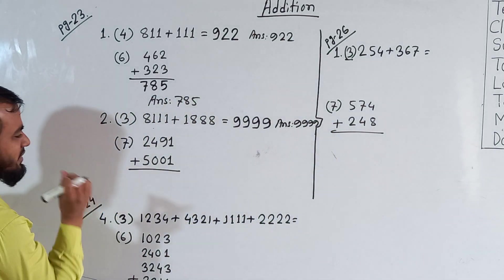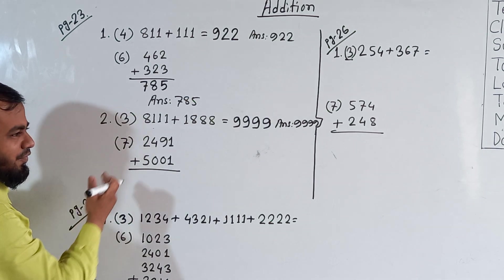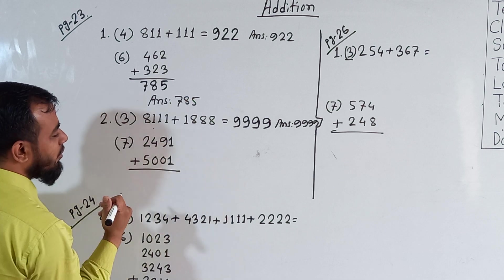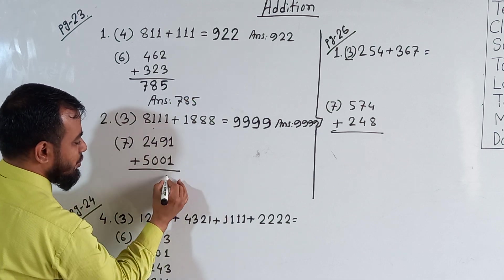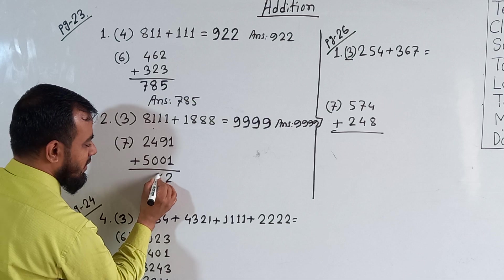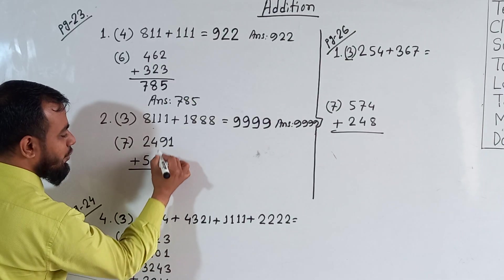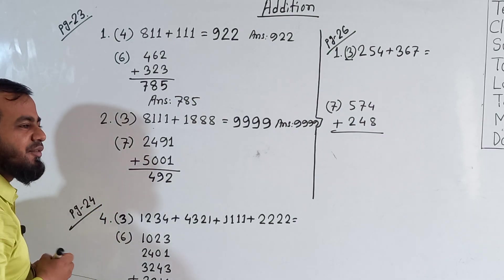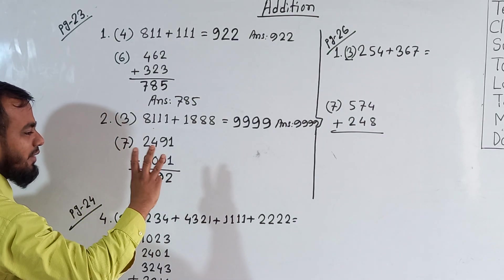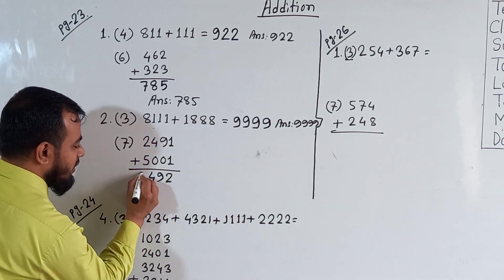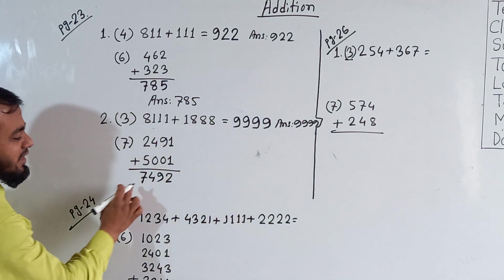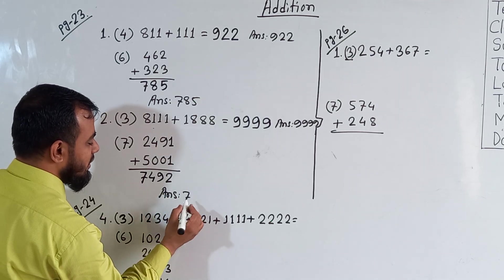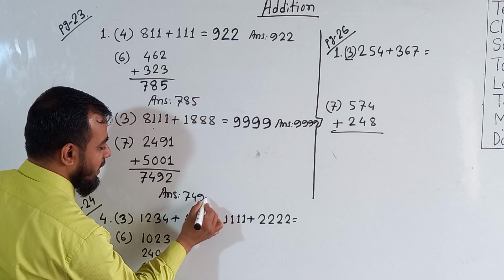Now sub-question number 7, which is already in vertical form — we like this most because it is easier. We start from the right side: 1 and 1 makes 2; 9 and 0 makes 9; 4 and 0 makes 4; and 2 add with 5 makes 7. So 7 in the 1000's place. This makes 7492, which is our answer.